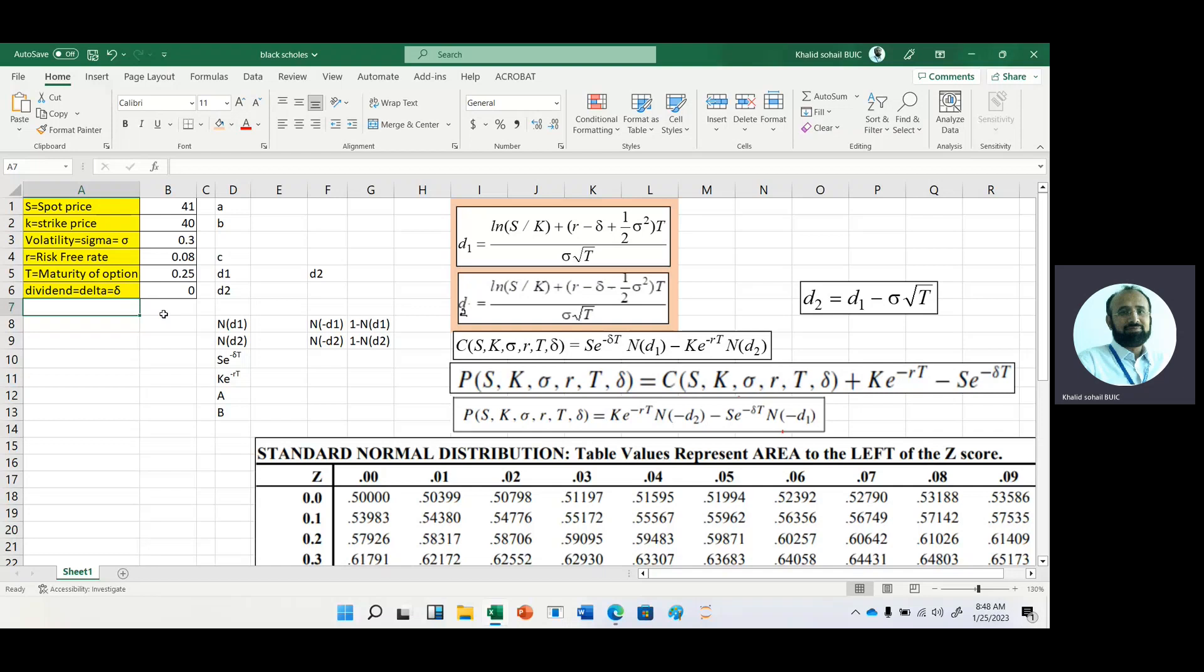According to this model, if we want to calculate the call option, we have D1. D1 is simply log S by K, which is basically a return, and then we have a second part: risk-free rate minus dividend yield plus half multiplied by sigma squared, multiplied by T, and then the whole thing is divided by sigma multiplied by square root of T.